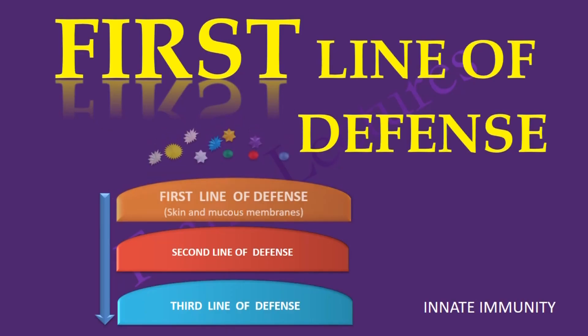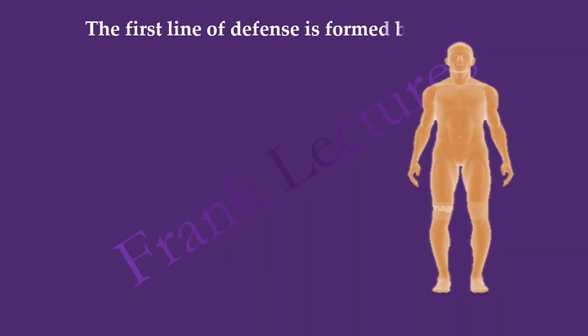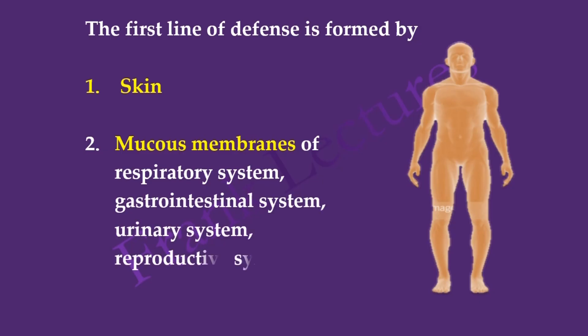Recall that innate immunity forms the first and second line of defense. The function of the first line of defense is to prevent pathogens from entering the body. We also saw that the first line of defense is formed by skin and mucous membranes. Let us now find out more details about the first line of defense.